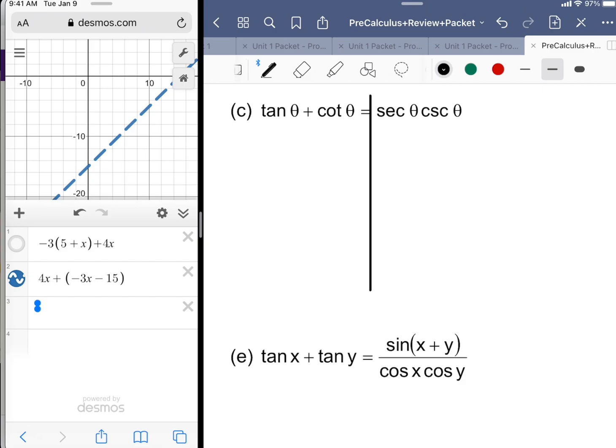One thing you might remember is that tangent is the same as saying sine over cosine. Cotangent is the same as saying cosine theta over sine theta.